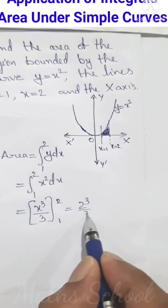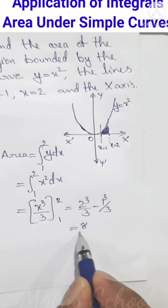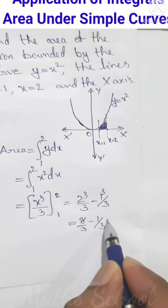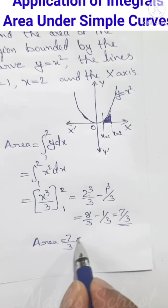That's equal to 2³/3 minus 1³/3, equal to 8/3 minus 1/3, equal to 7/3. Therefore, area = 7/3 square units.